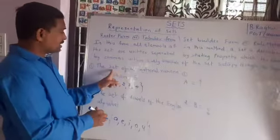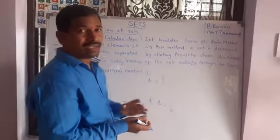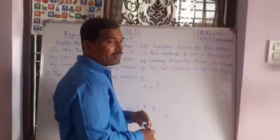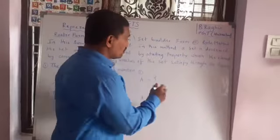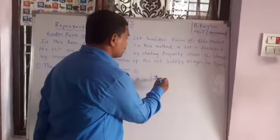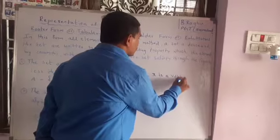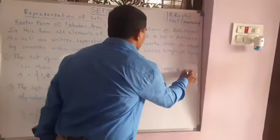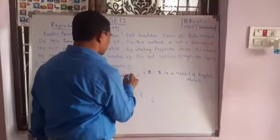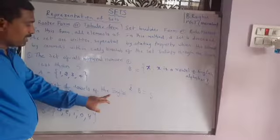Let us take the set of all natural numbers less than 5 in set builder form. We write some property using a variable. We use English small letters for elements, so here I am writing X. X is an element such that X is a vowel of the English alphabet. This is the type of set builder form.